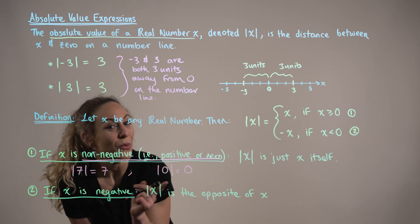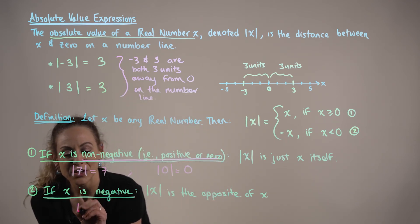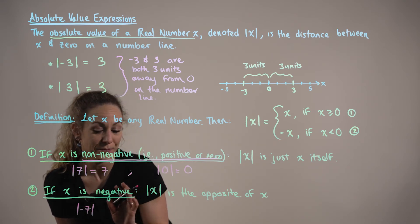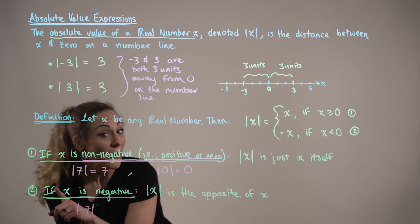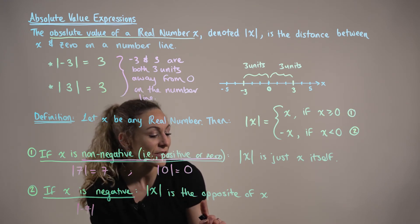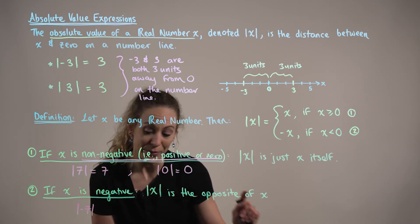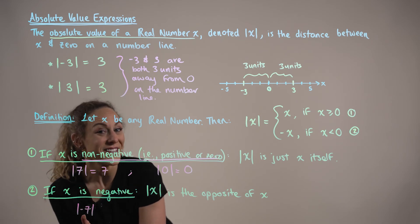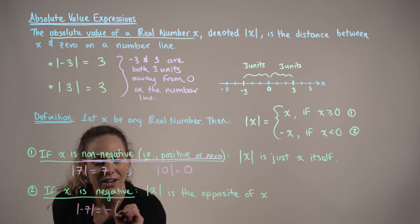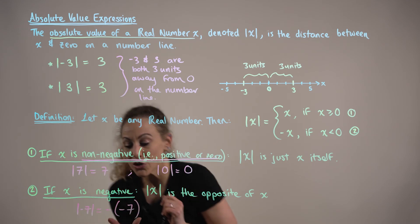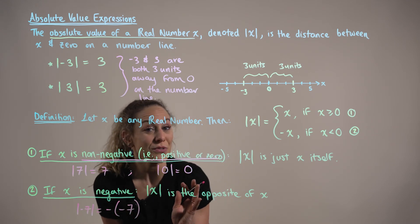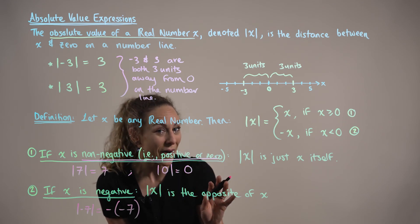Case two is the more exciting case. Suppose we're asked to evaluate the absolute value of negative seven. From the definition, we know that the absolute value of a negative number is going to be the opposite of that value. So the opposite of negative seven gives us a negative multiplied by a negative seven, which we of course know produces a positive value.